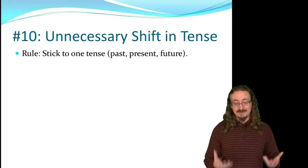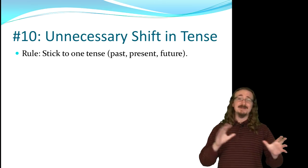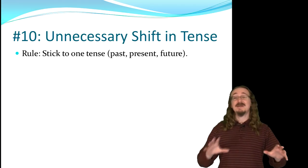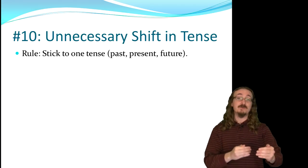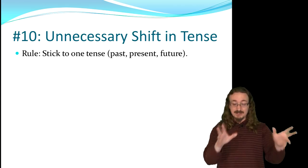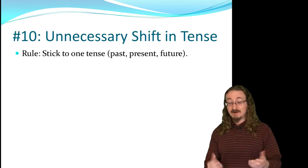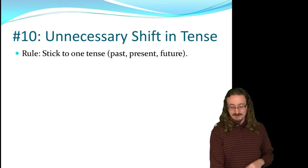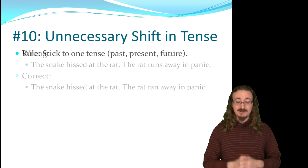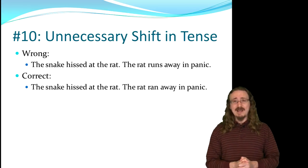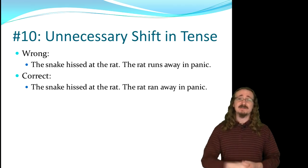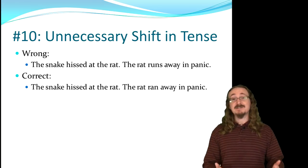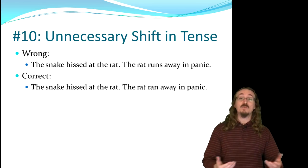Number 10: unnecessary shifts in tense. This is often a proofreading error — you go back and change a sentence or two but don't reread the whole paragraph to make sure it still works. If you start in the past tense, keep it in the past. 'The snake hissed at the cat, the rat runs away in panic' — you started in past and switched to present. Correct: 'The snake hissed at the rat, the rat ran away in panic.'